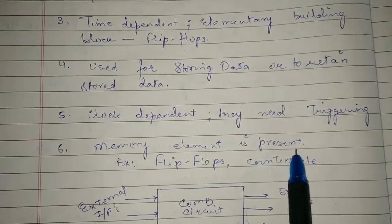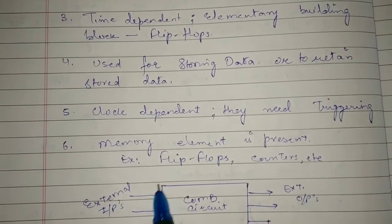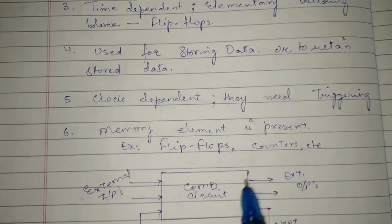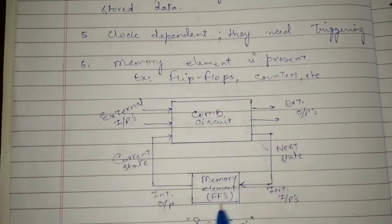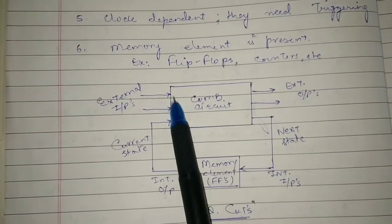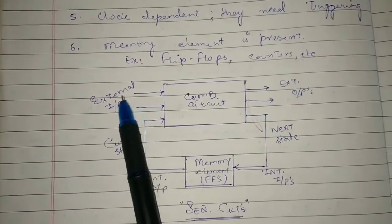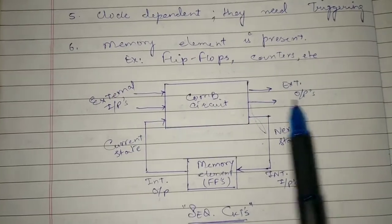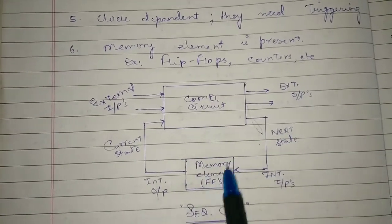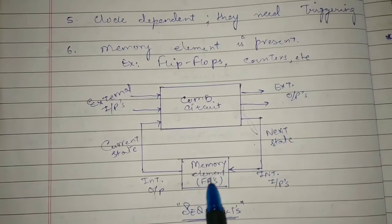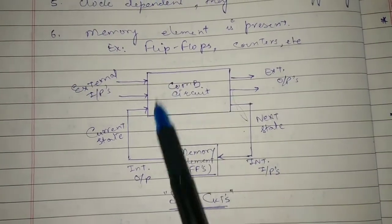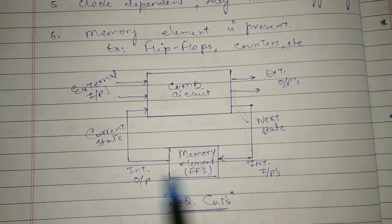Memory elements are present in sequential circuits. For example, flip-flops, counters, etc. are examples of sequential circuits. This block diagram of sequential circuits shows a combinational circuit with external inputs and external outputs, and a feedback path through memory elements — usually flip-flops. Sequential circuits are essentially combinational circuits with feedback and memory.